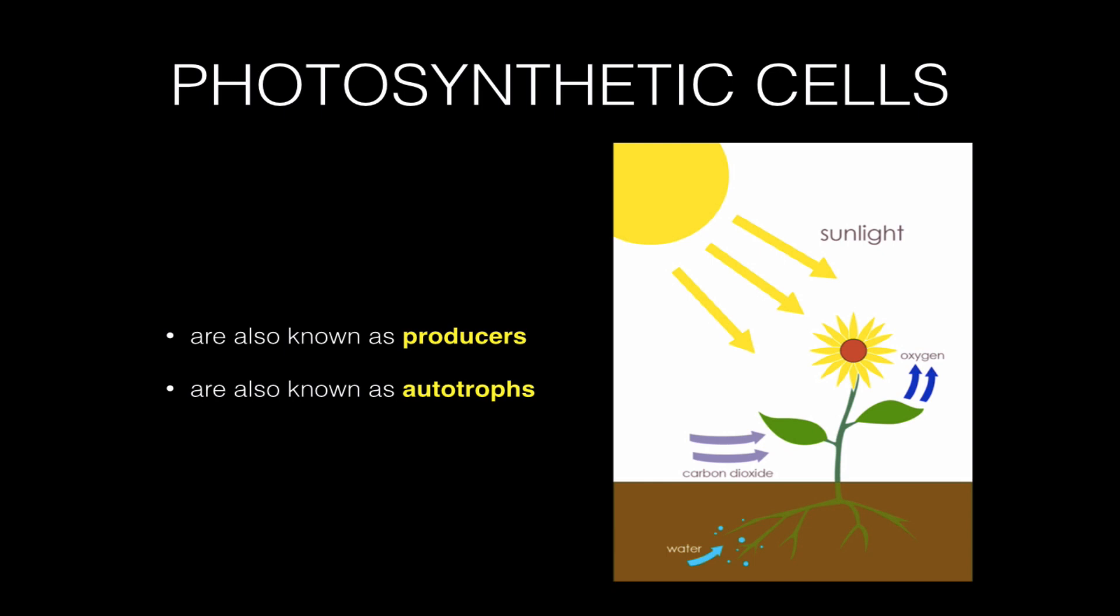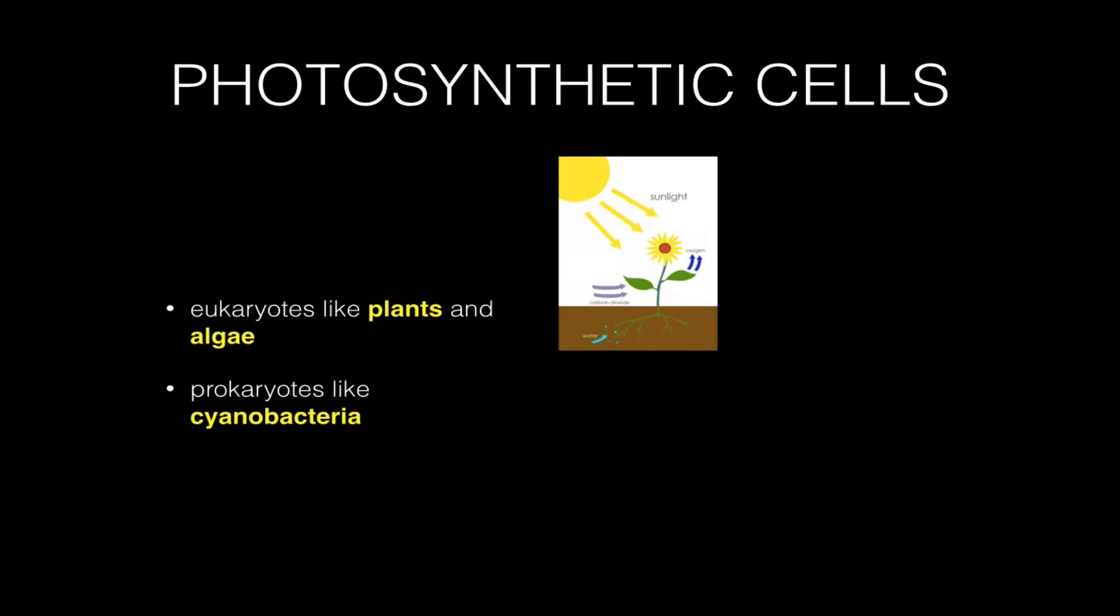Because plants are making all of this stuff using carbon dioxide, sunlight energy, and water, we call them producers. Another way of thinking about them is autotrophs, because they have the ability to make their own food. But don't forget, plants are not the only autotrophs.